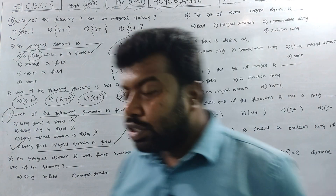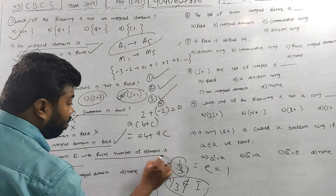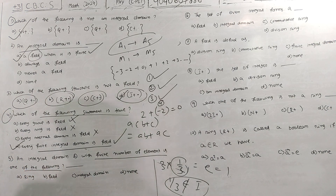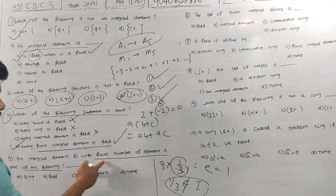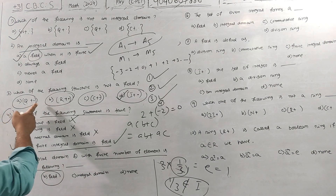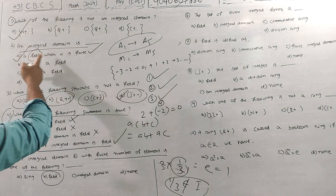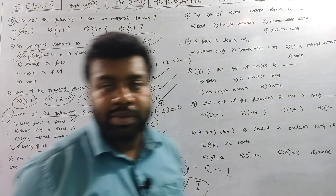Next question: an integral domain D with a finite number of elements — which of the following is it? A finite integral domain is always a field. So the answer is: a field. The integral domain with a finite number of elements is a field.